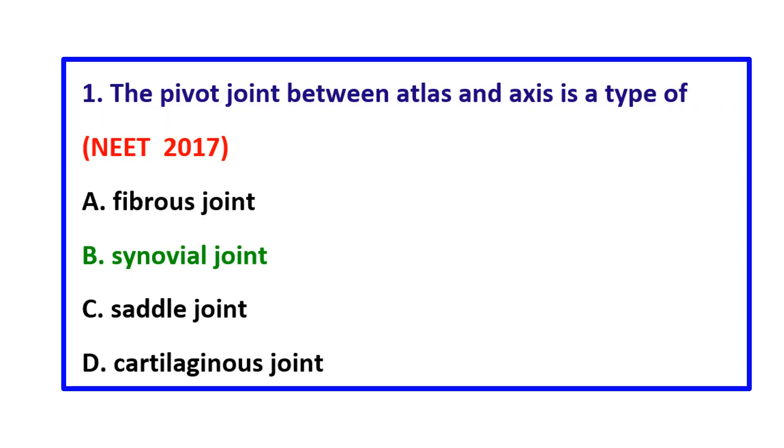Question 1: The pivot joint between atlas and axis is a type of — the correct answer is synovial joint.